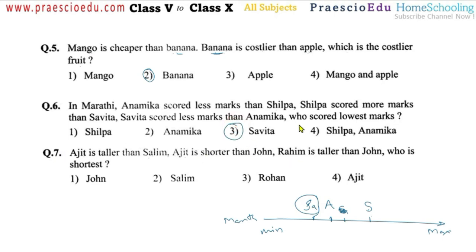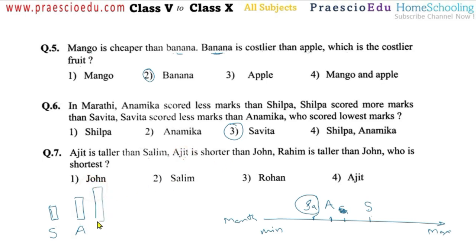Question number seven: Ajit is taller than Salim. Using a bar chart, Salim (S) is shorter and Ajit is taller. Then Rahim is taller than John, and John is shorter than Rahim. From these four persons, Salim is the shortest. Salim means option number two is correct.